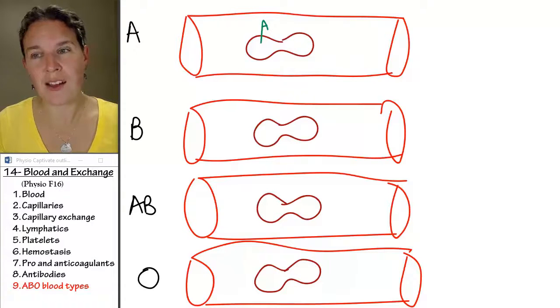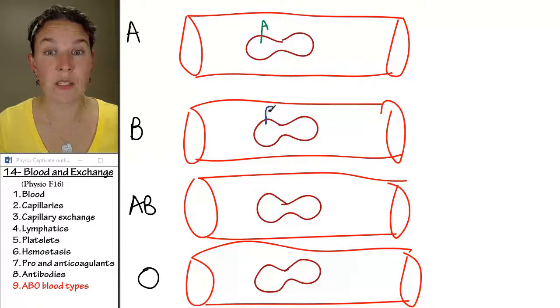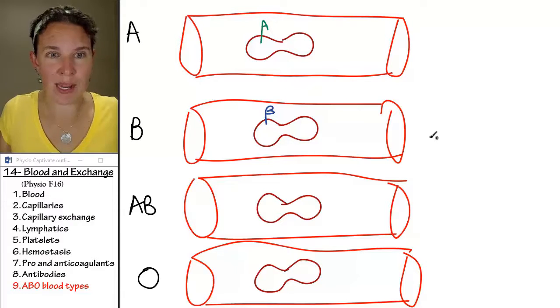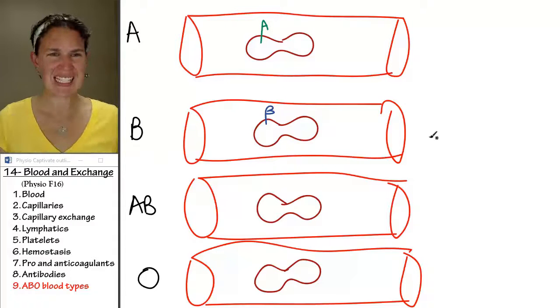What kind of antigen would you expect in a type B blood cell? It's going to be a B antigen, right? Super easy. Done.